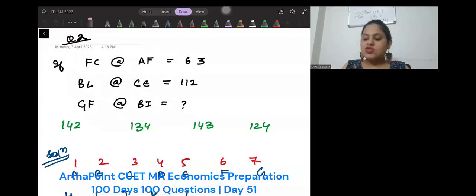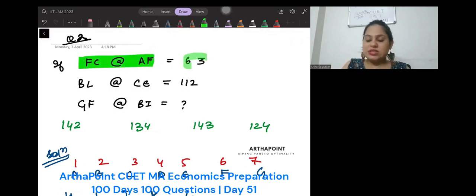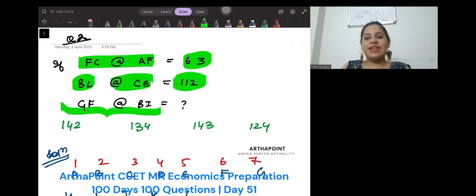Hello everyone, let us try to solve this question. It's a question on logic. It says FC at the rate AF is 63. BL at the rate CE is 112. What should be GF at the rate BI?